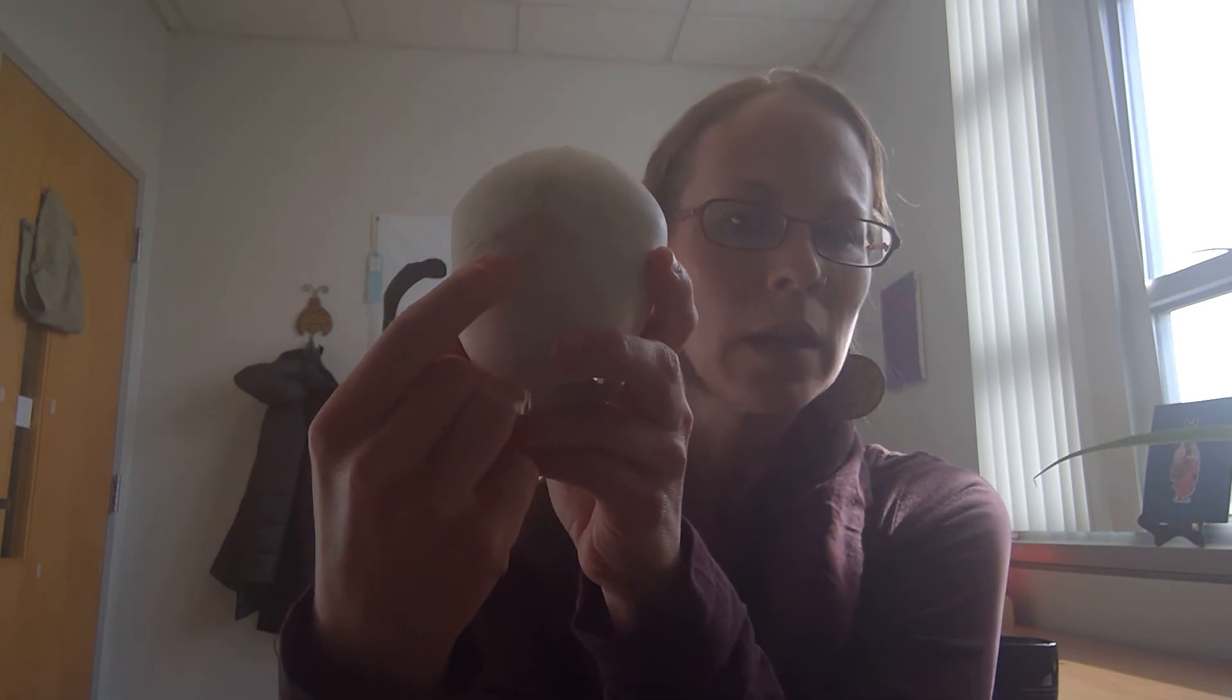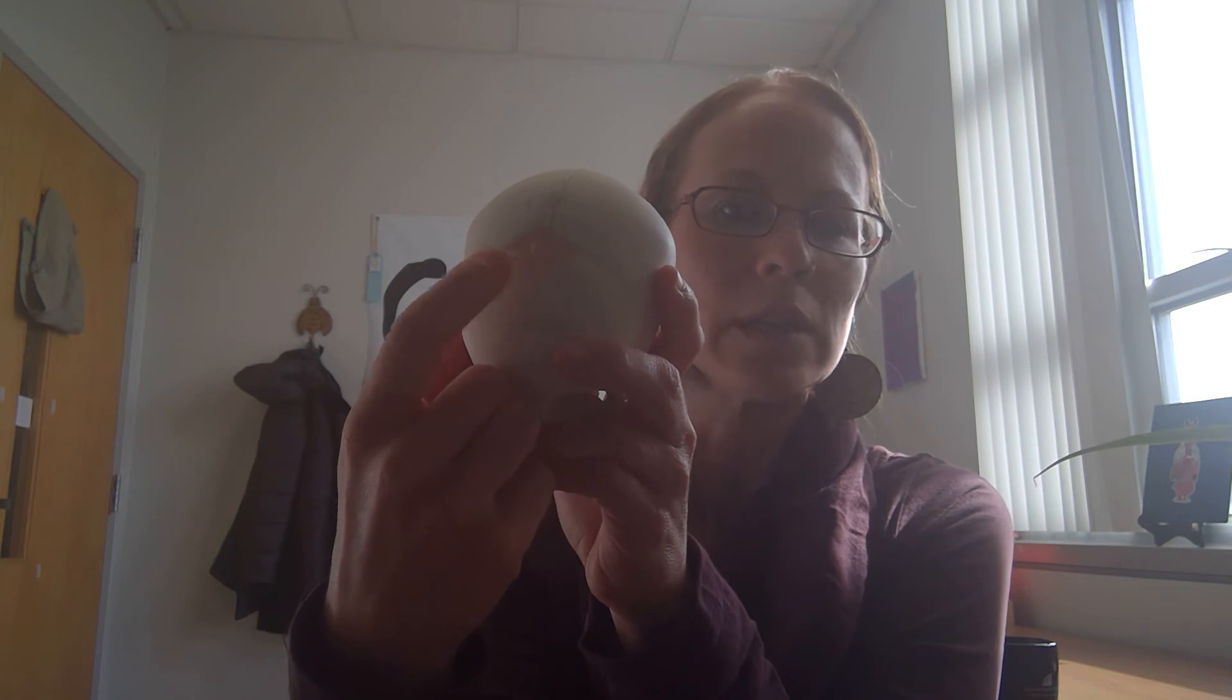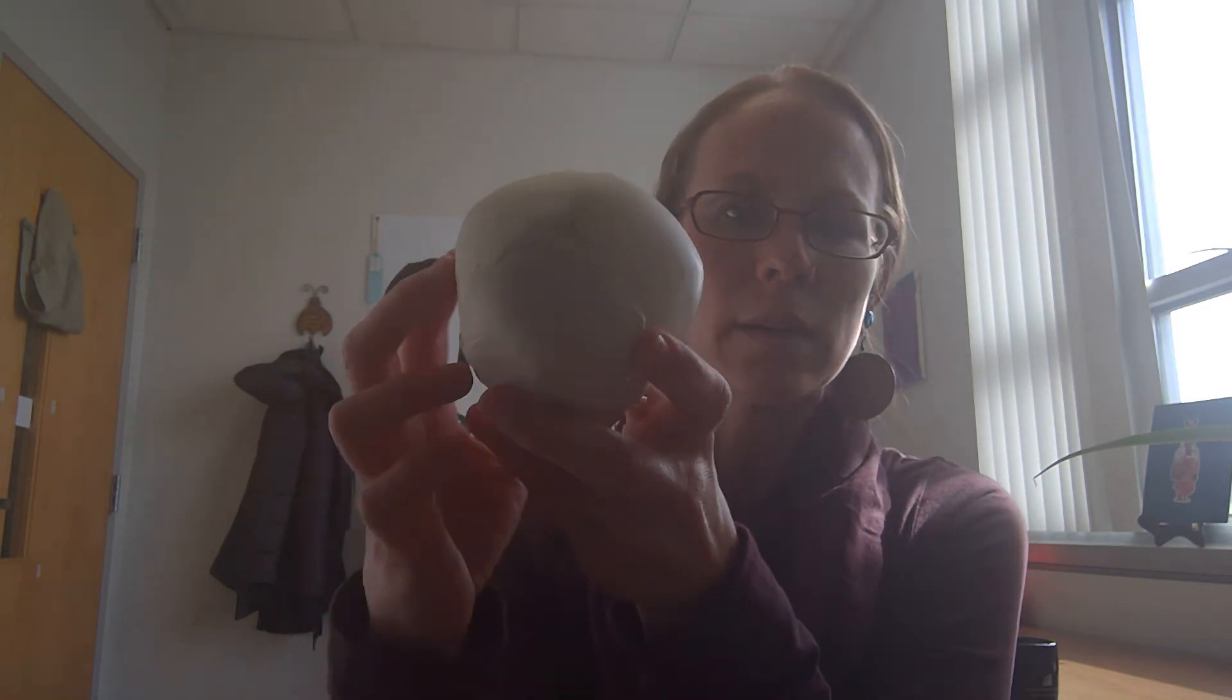So here you see the anterior or the frontal fontanelle where the frontal bones and the parietal bones are coming together. That's the biggest and the one you've probably have already seen before. The back of the skull we have the posterior fontanelle.